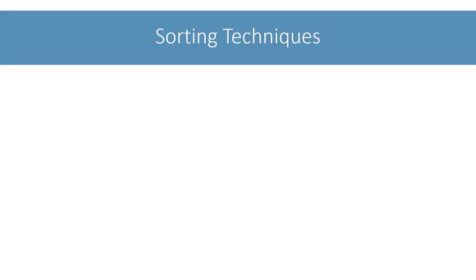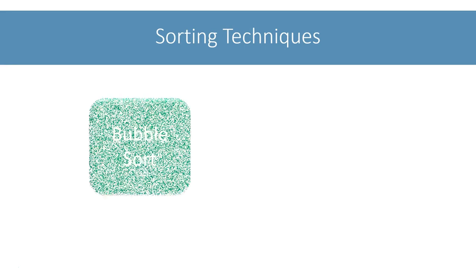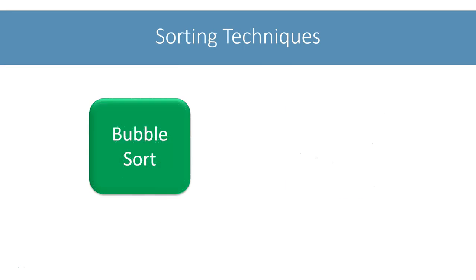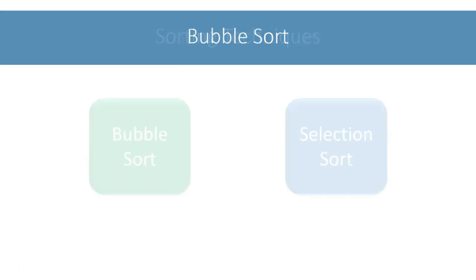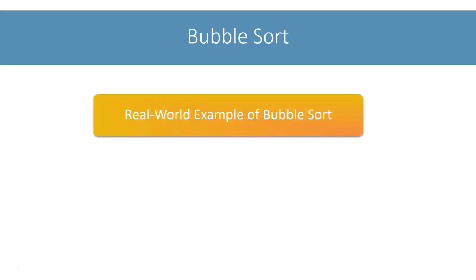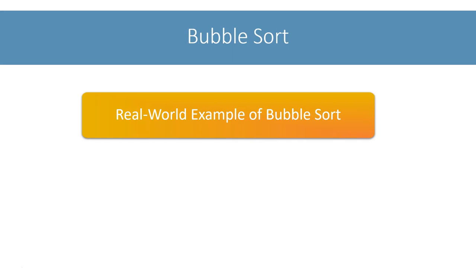The ICC Computer Applications syllabus prescribes two of them: Bubble Sort and Selection Sort. Let's start with bubble sort. Let's keep programming and Java aside for a while and try to understand bubble sort through a simple real-world example.